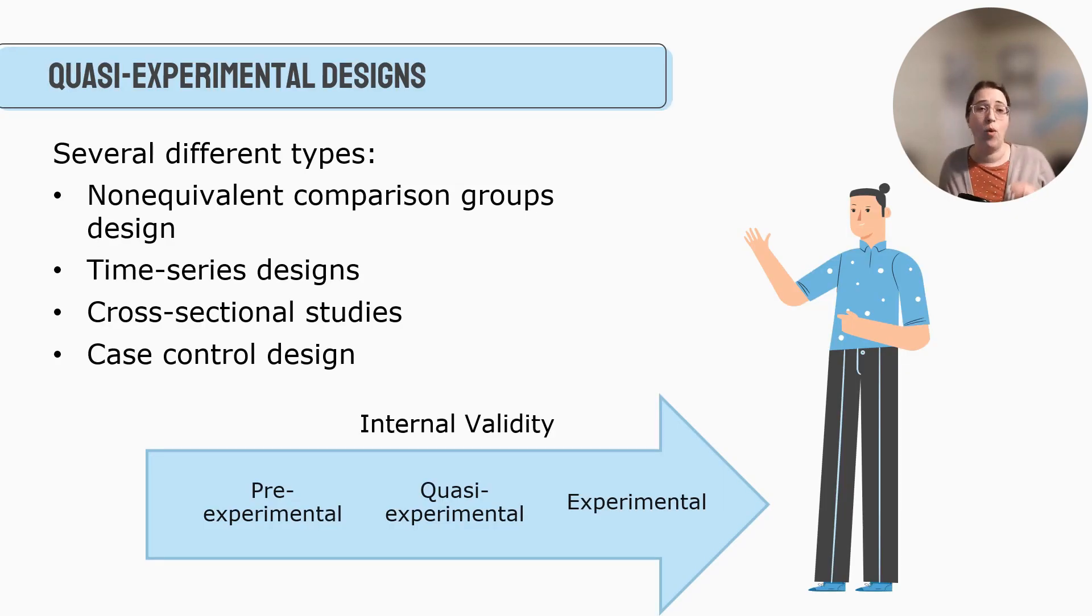So there's several different types of quasi-experimental designs. There's the non-equivalent comparison groups design, time series designs, cross-sectional designs, and case control designs. And what you find is when you're looking on a continuum of internal validity, pre-experimental or those pilot studies we talked about, those have the lowest internal validity. We talked about without a group or a comparison group or without a pretest, we don't really know if things like history or maturation have affected scores. Then we get to experimental on the other end, which is the highest level of internal validity. Quasi-experimental is kind of hanging out in the middle. A little bit more internal validity than pre-experimental, but less internal validity than experimental.